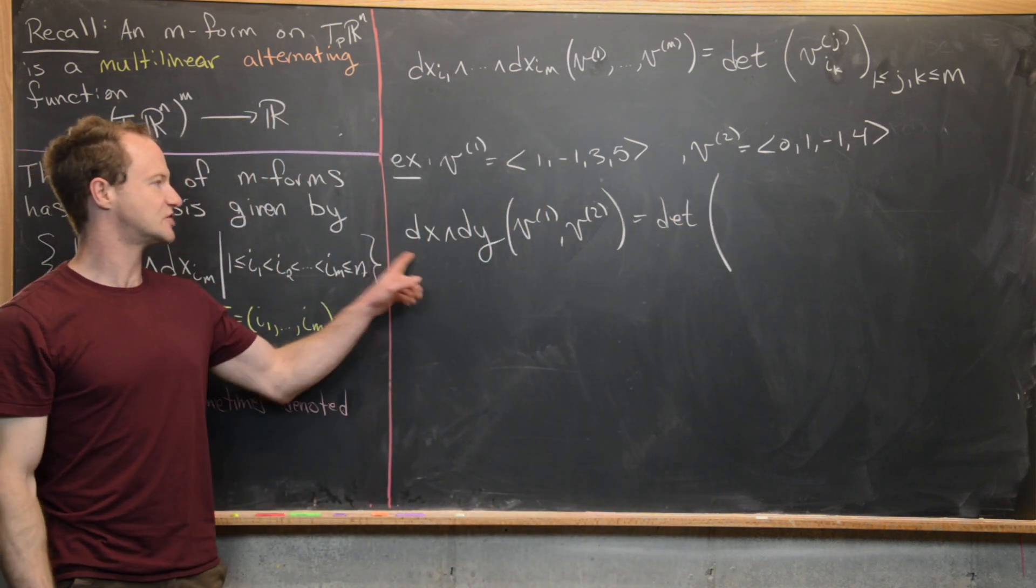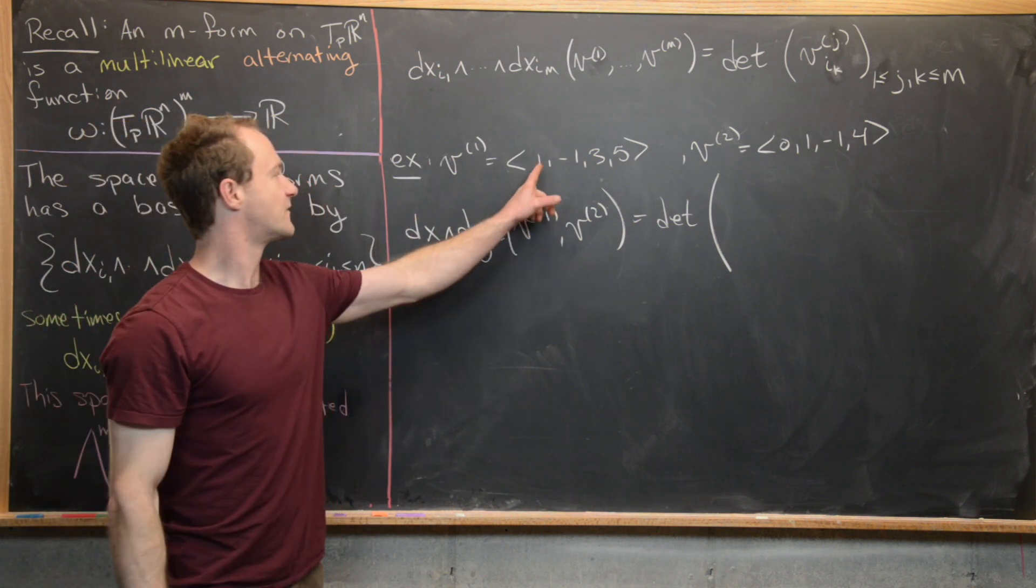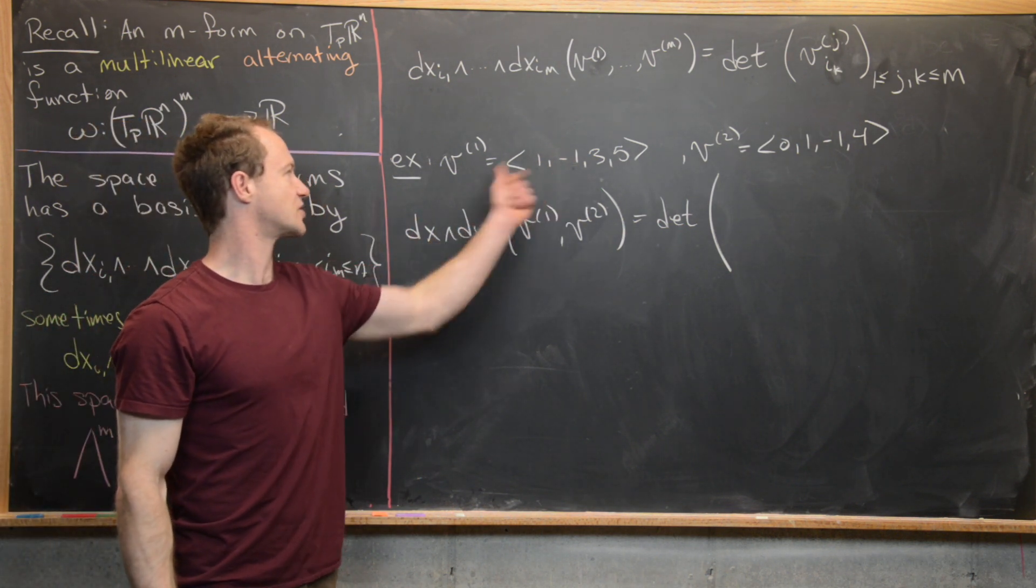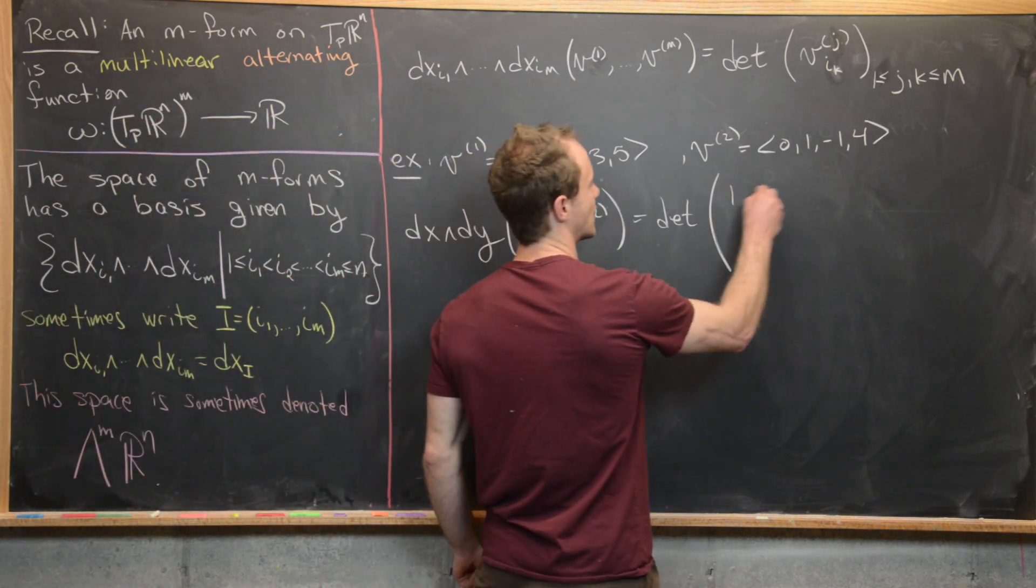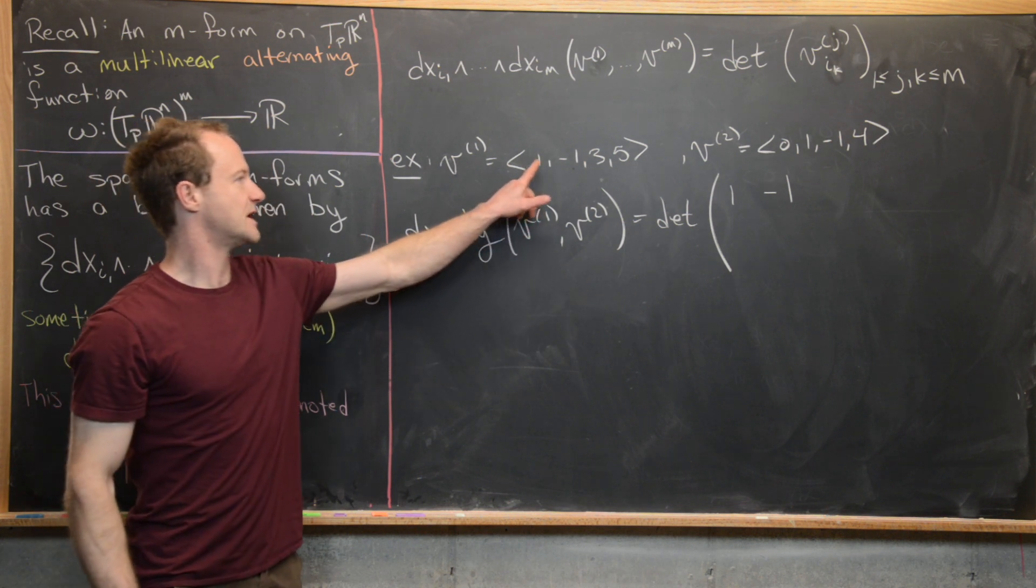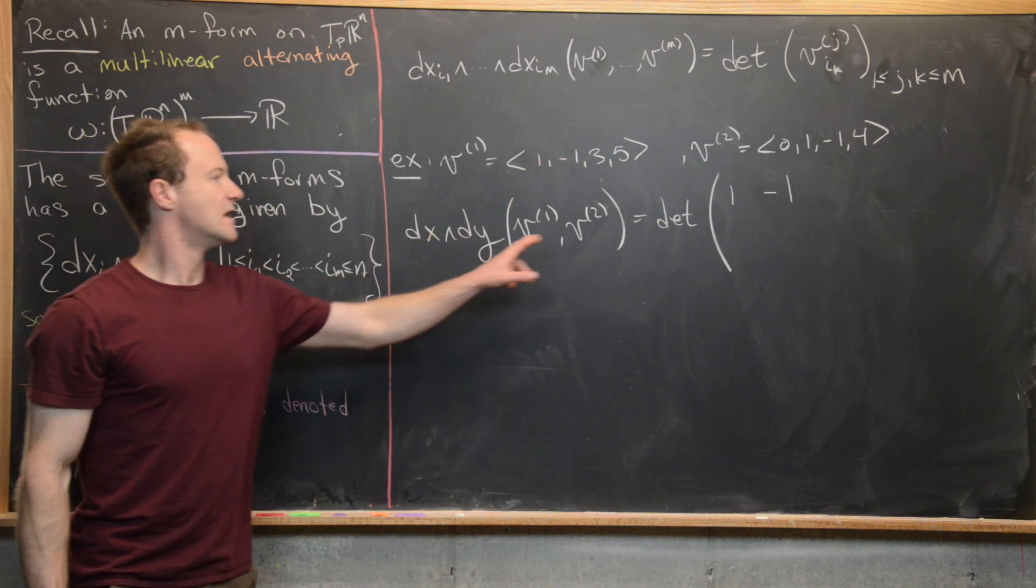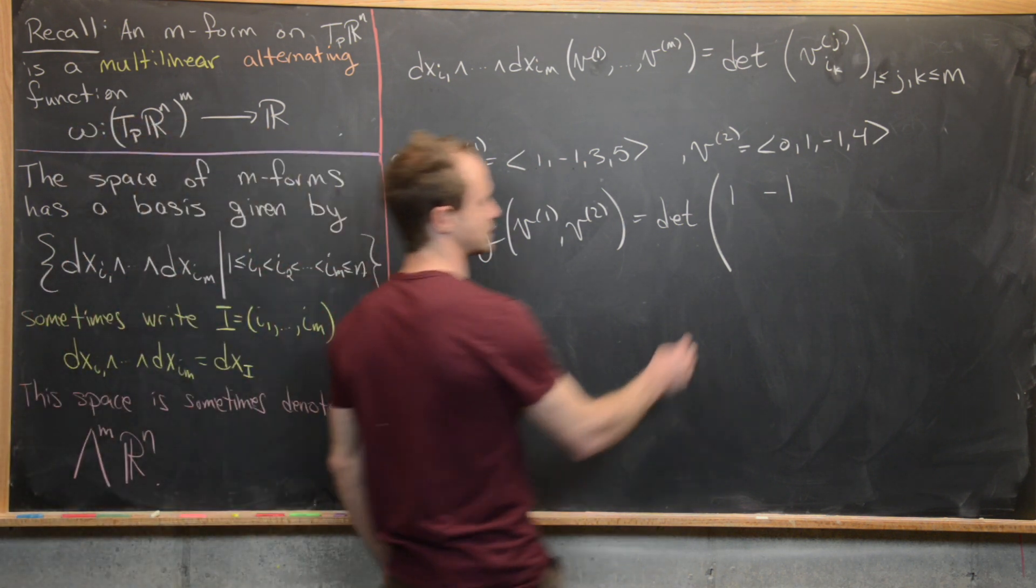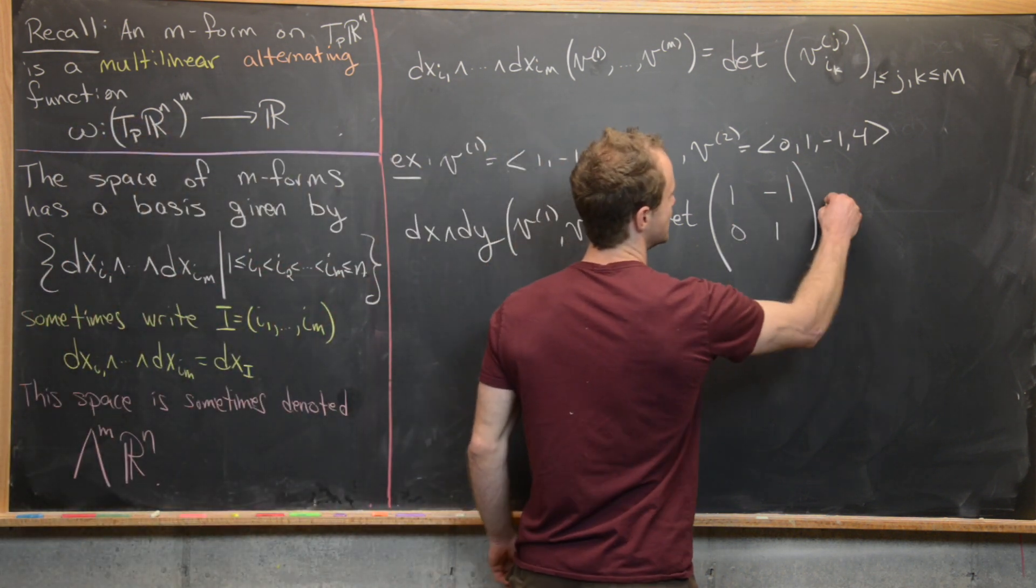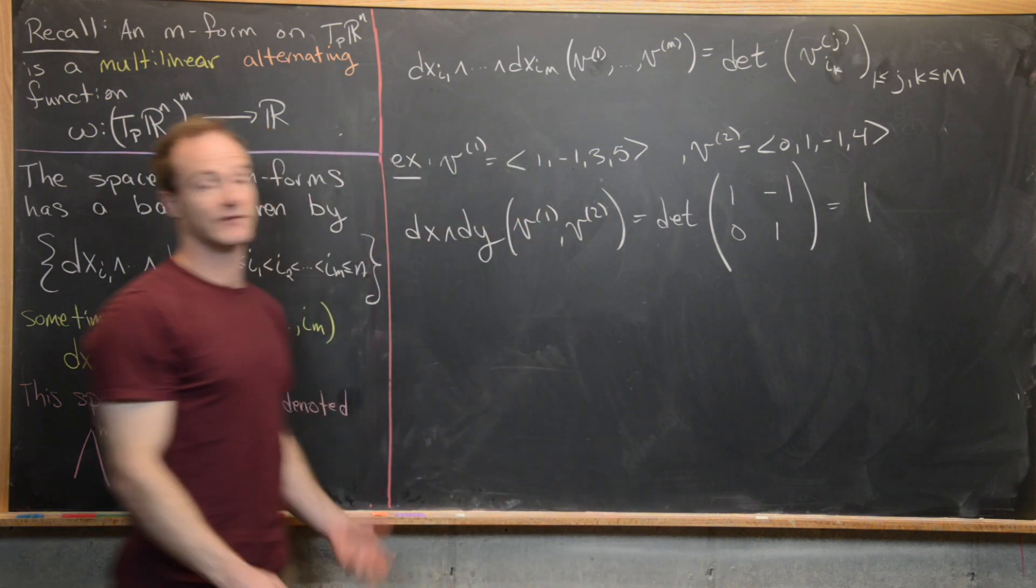So that's going to give us the determinant of a 2 by 2 matrix. And we get that 2 by 2 matrix by taking the first entry and the second entry from V1. That goes in our first row. So here we'll get 1 and negative 1. And then the first entry and the second entry of the second vector in the second row. So here we'll get 0, 1. So the determinant of this is obviously 1.